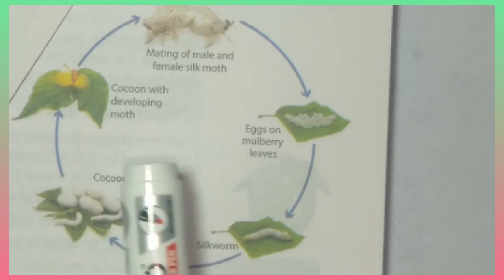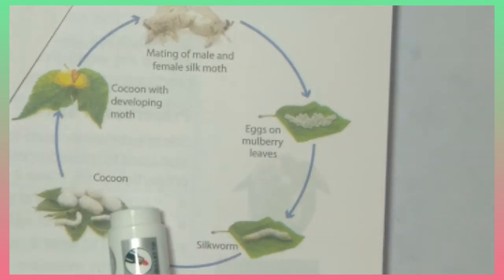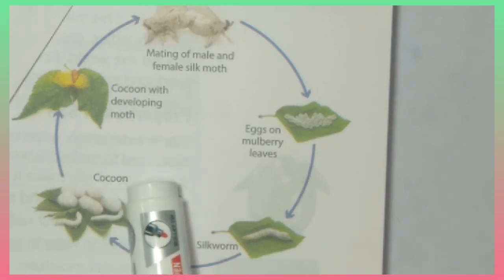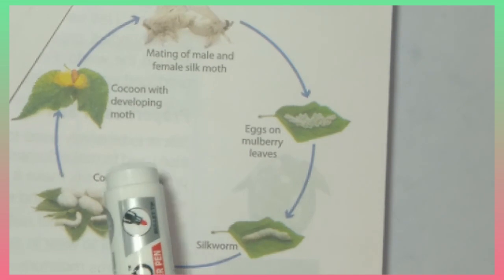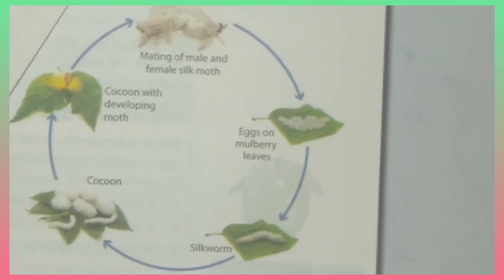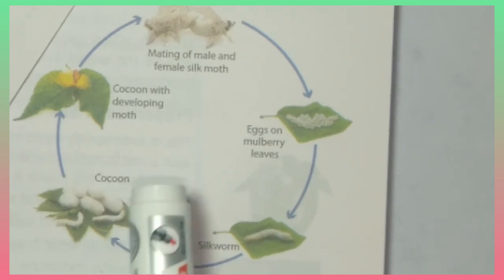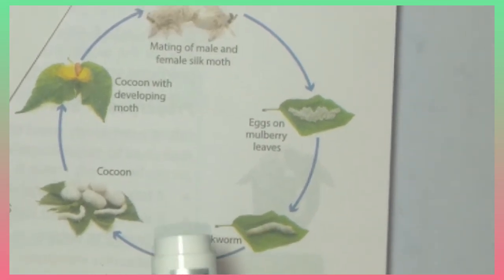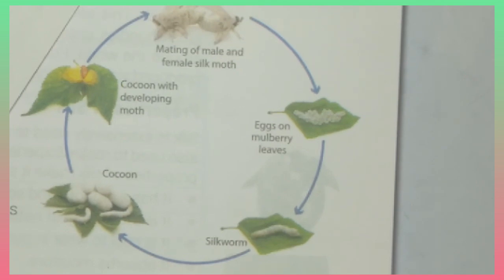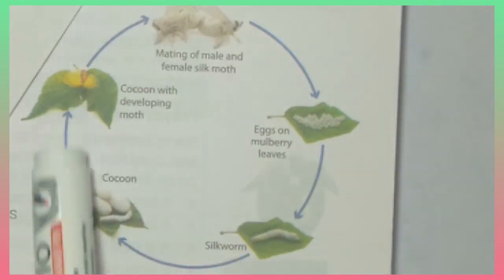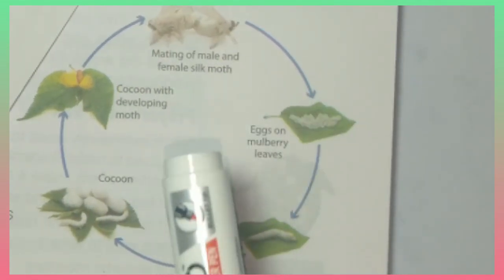Now, the next is adult silkworm or silk moth. The pupa transforms in the cocoons. A few weeks later, the cocoons opens up and the adult silk moth sees the world. This silk yarn is extracted from the cocoon of the silk worms. So this is the life cycle of silk moth.